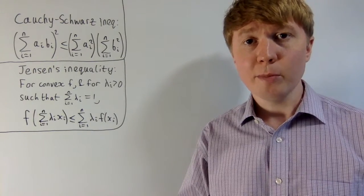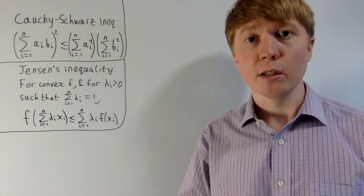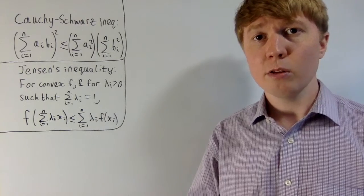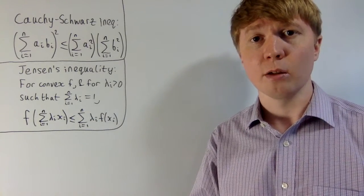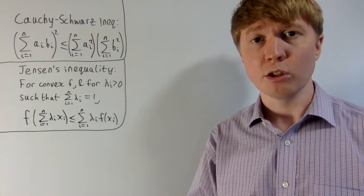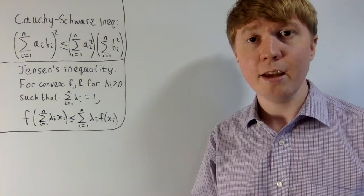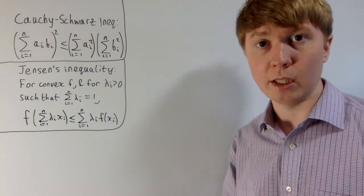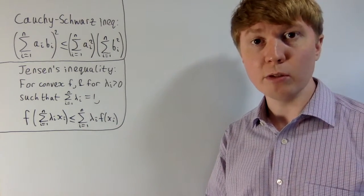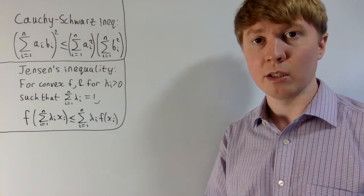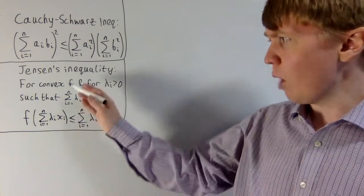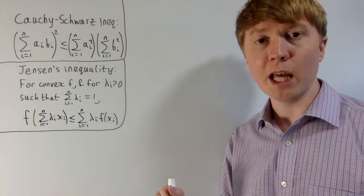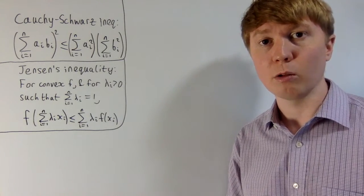We're going to have a look at a proof of the famous Cauchy-Schwarz inequality, which uses Jensen's inequality. There are quite a few different versions of Jensen's inequality — some to do with integration and measure theory — but the one we need here is relatively simple. This is just a version to do with finite sums, and there's a nice way to view this geometrically, before we apply it to prove the Cauchy-Schwarz inequality.